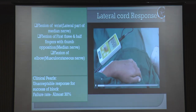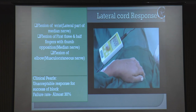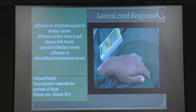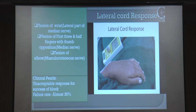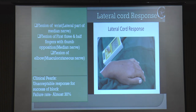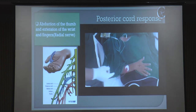The first response which you usually get, if there is not much anatomical variation, is the lateral cord response. This is a video from Hessel - thank you Hessel for giving me this video. You have elbow flexion because of the stimulation of musculocutaneous, and flexion of three and a half fingers, which is supplied by the lateral cord of the median nerve. But this is an unacceptable response, because the failure rate is almost 90%. So if you are getting a lateral cord response, you have to search for either a posterior cord or a medial cord.